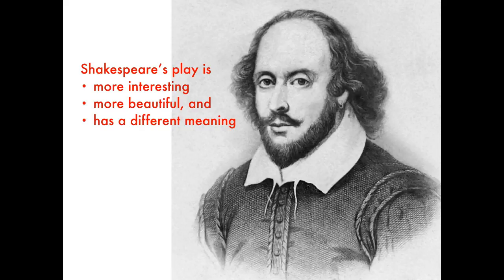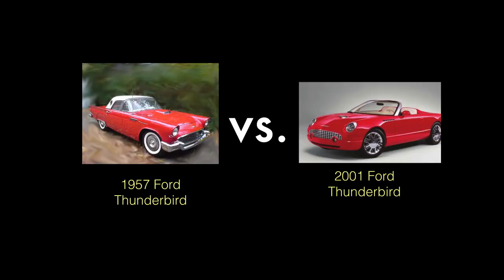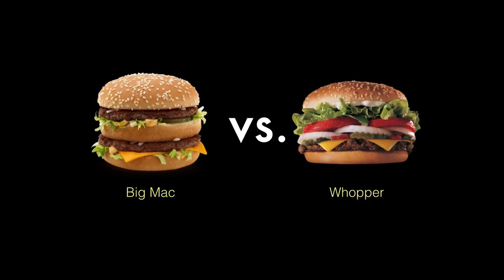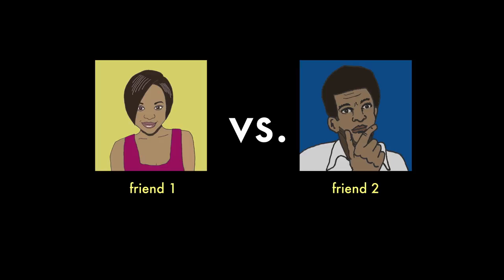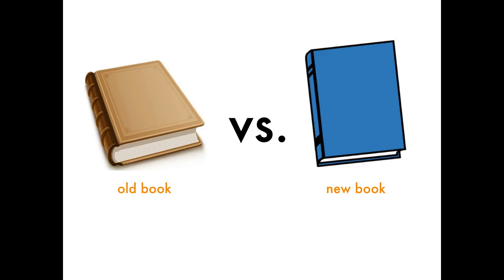If a teacher asks you to compare a work of literature with its source material, don't sweat it. It's like comparing two of anything else — two cars, two hamburgers, two people. Look at how they're similar. Look at how they're different. Then draw a conclusion from what you find. It's basically just comparing and contrasting. And if you think back, maybe you've done that before for another class.